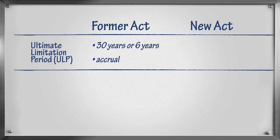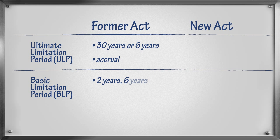Under the former act, there were three different basic limitation periods: two years, six years, and ten years. The length of the basic limitation period depended upon what type of legal claim was being made. The basic limitation period ran from discovery in some cases, but in other cases it started to run from the date that all of the individual elements of the legal claim were present,